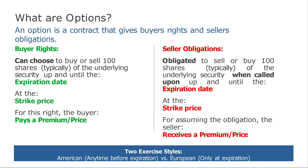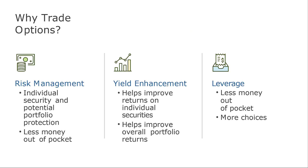As we can see, the buyer has the right but not the obligation. If the price doesn't go in the direction we want, we can just let the option expire. But if we are the seller, things are much more complicated. At the beginning of the trade you receive the premium, but if the trade goes against you, you can be hurt a lot because you have to pay the full difference to the buyer.